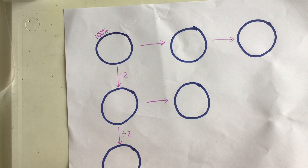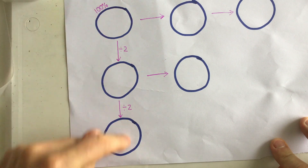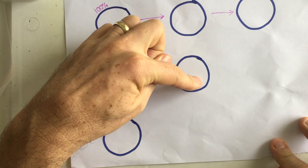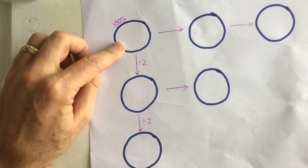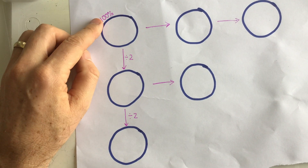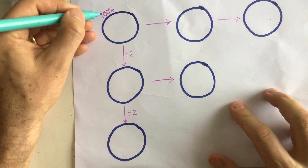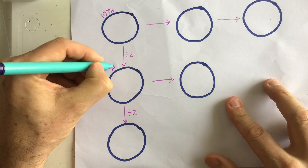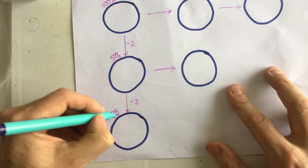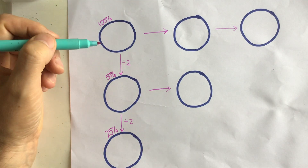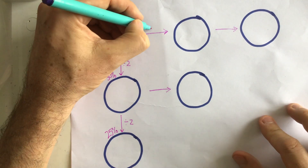You will need three circles in a column, then two circles in the next column, and one circle in the final one. The first bubble is where you write your starting number, your 100% number. The one below that is half of that, so half of 100% is 50%, and underneath that we halve again to get 25%. So this method allows you to find percentages by halving and also by dividing by 10.